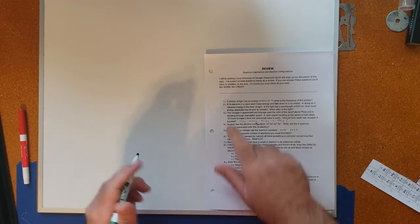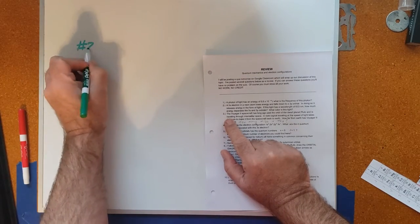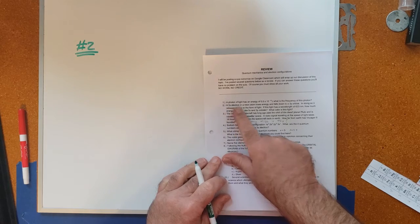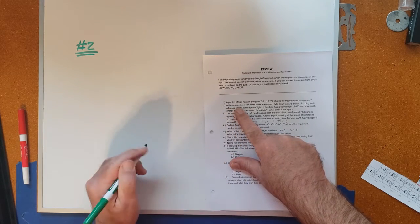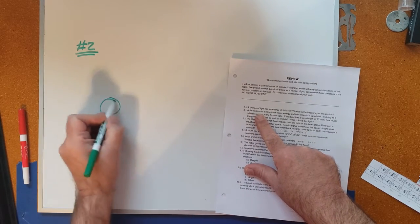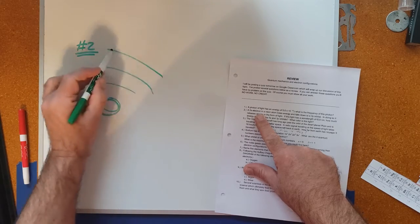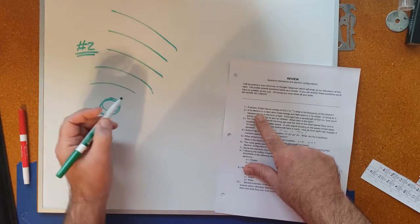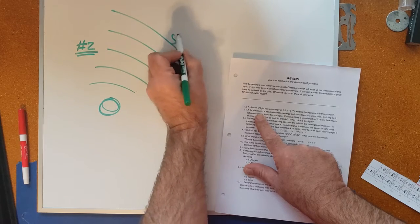Okay boys and girls, let's show you number two. It says a 5s electron in a neon atom. Okay so here's the nucleus and here are some of the orbitals. We have a 5s electron.